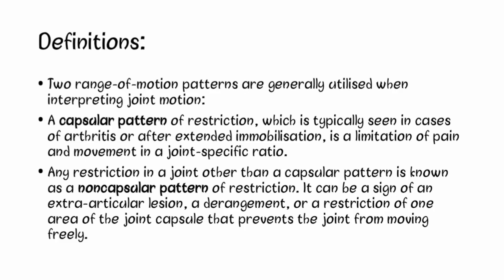Now let's talk about the definitions. There are two range of motion patterns utilized when interpreting joint motions. The first is the capsular pattern of restriction, typically seen in cases of arthritis or after extended immobilization — a limitation of pain and movement in a joint-specific ratio. Any restriction other than the capsular pattern is known as a non-capsular pattern of restriction, which can be a sign of an extra-articular lesion, a derangement, or a restriction of one area of the joint capsule that prevents the joint from moving freely.